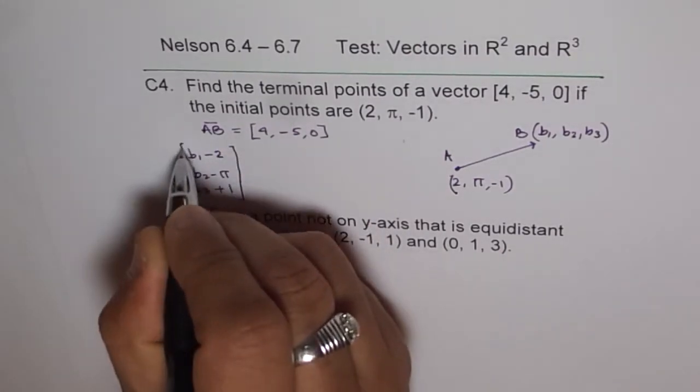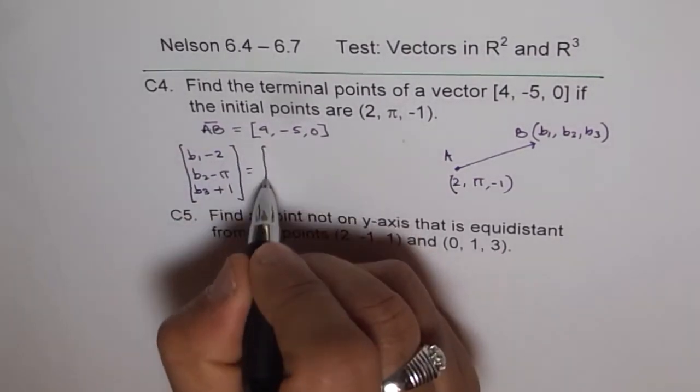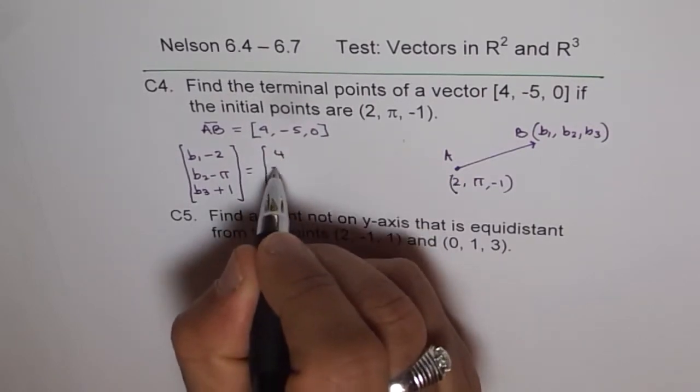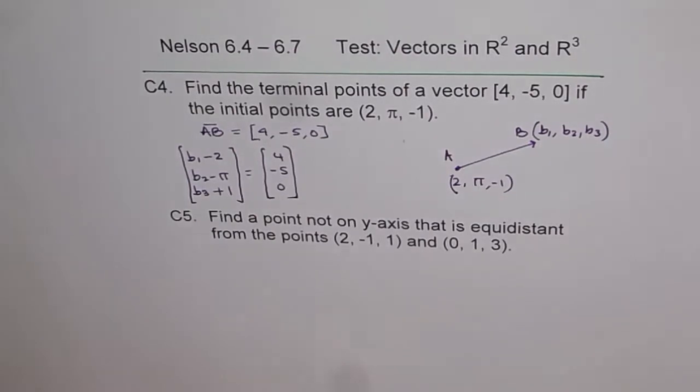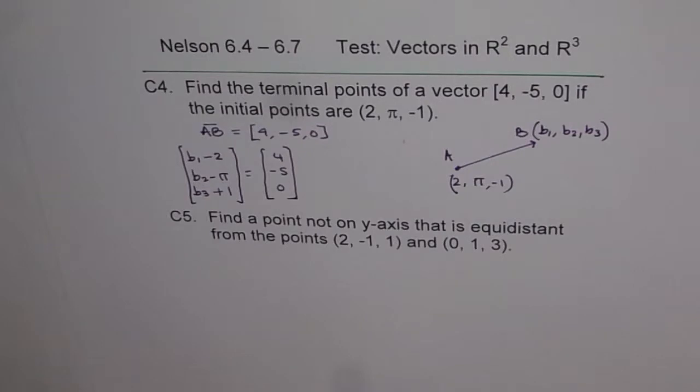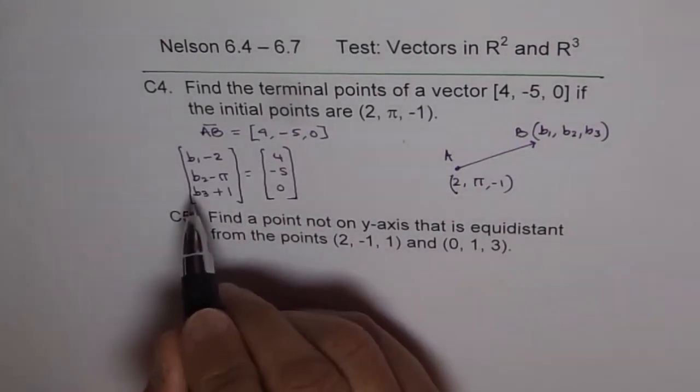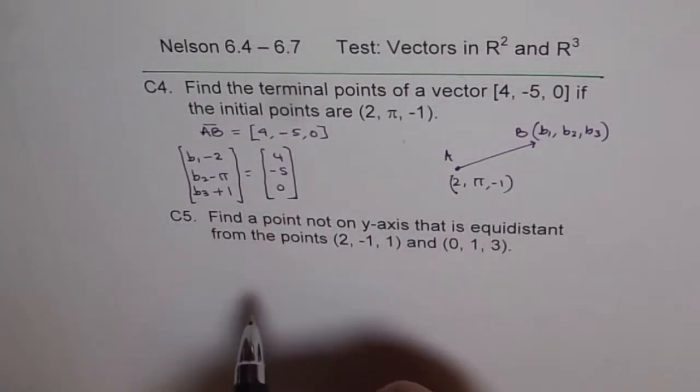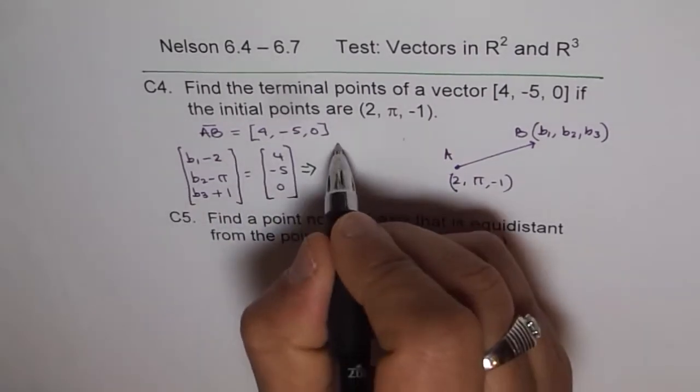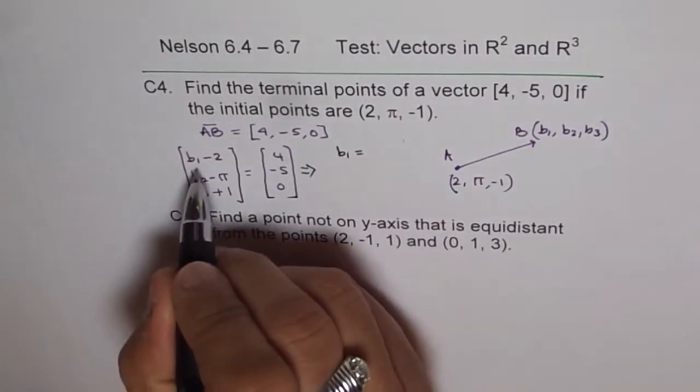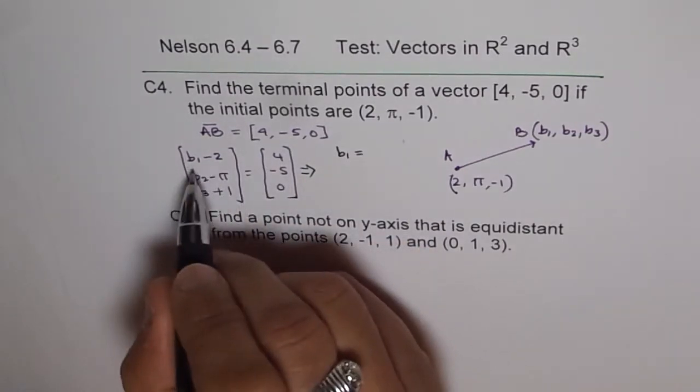And this is equal to [4, -5, 0]. So I have written it in the column matrix form. It gives you a good visual look, and that's why I really prefer it. Now from here, you can solve what b₁ should be, what b₂ should be, and what b₃ should be. So from here, we can get our solution. b₁ minus 2 is 4, that means b₁ is 6.